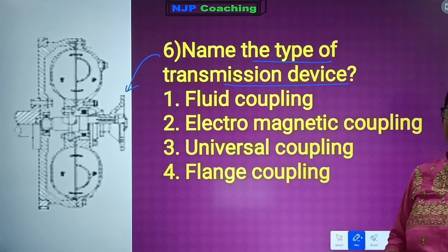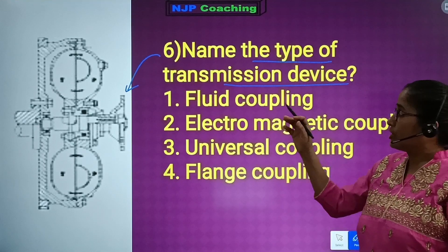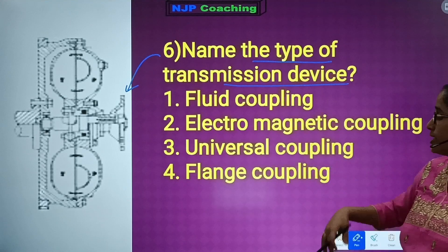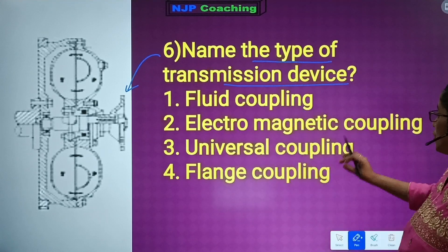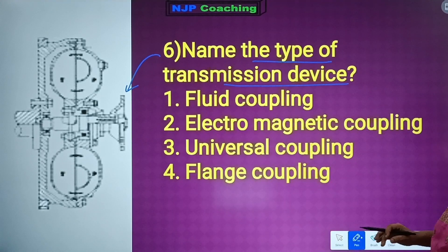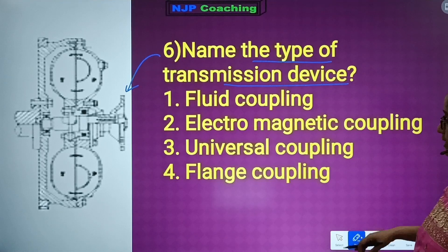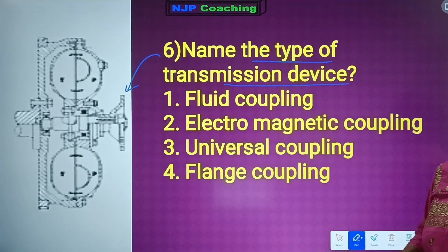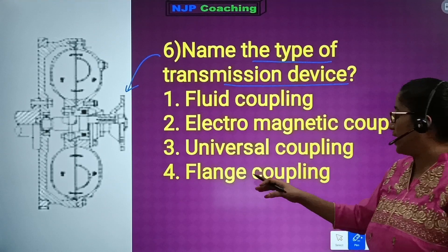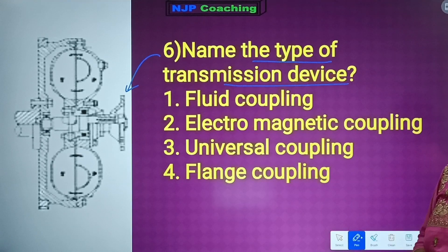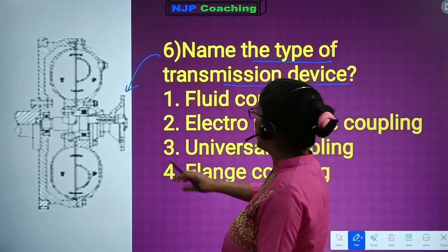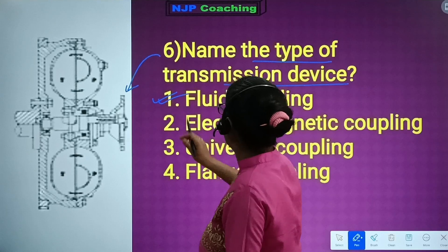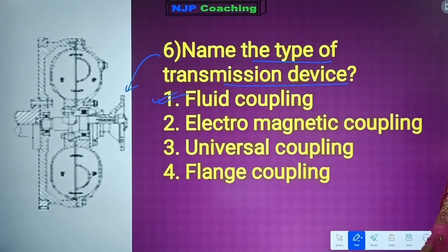Question number 6 on transmission devices. Options: 1) Fluid Coupling — torque production, 2) Electromagnetic Coupling, 3) Universal Coupling, 4) Threaded Coupling. The correct answer is number 1 — Fluid Coupling, which is a transmission device used for torque production.